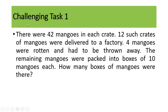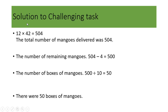Challenging task 1: There are 42 mangoes in each crate, and 12 such crates were delivered to a factory. 4 mangoes are rotten and must be thrown away. Find how many mangoes can be packed in boxes of 10. Solution: 12 × 42 = 504 total mangoes; 504 - 4 = 500 remaining; 500 ÷ 10 = 50 boxes. This combines multiplication, subtraction, and division in a single expression. Try implementing this in Scilab.